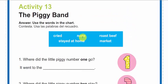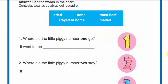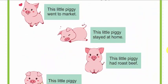Y ustedes tendrían que responder aquí con alguna de las cinco opciones que tienen aquí: cry, none, roast beef, stayed at home, or market. ¿A dónde fue? Bueno, pues podríamos checar también la canción y probablemente encontraremos la respuesta. Por ejemplo, les voy a ayudar con esta.